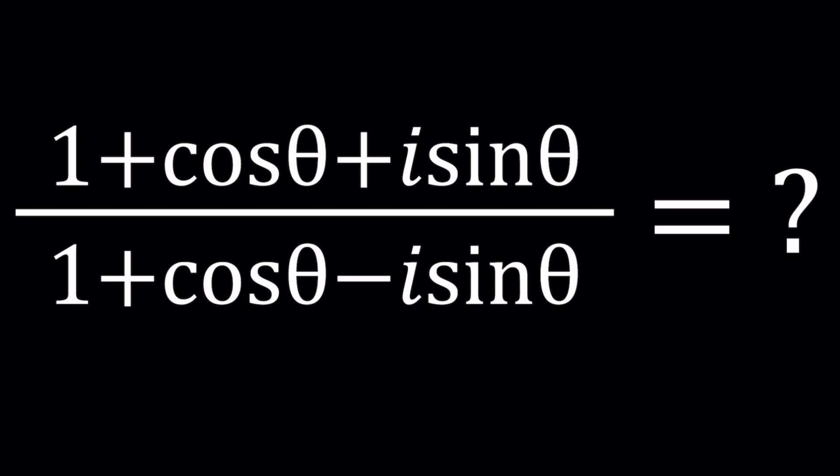It's not too complex, not bad. We have 1 plus cosine theta plus i sine theta divided by 1 plus cosine theta minus i sine theta. Notice that the sign changes between the real parts and the imaginary parts.